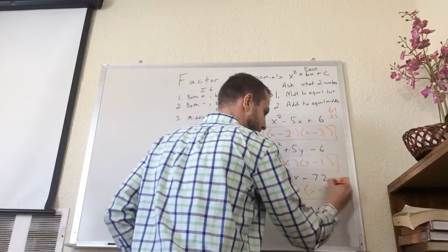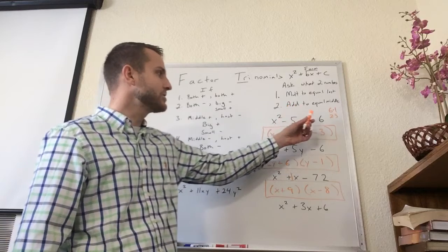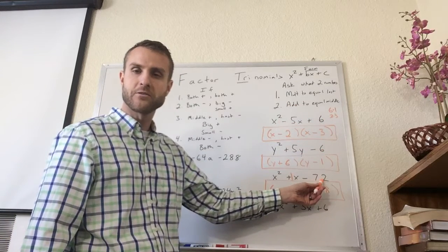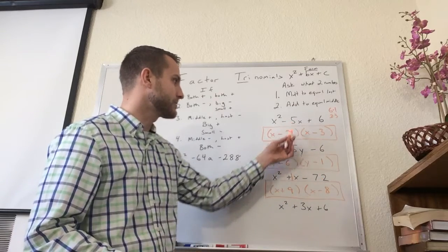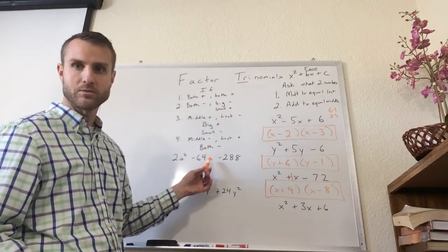So this is my answer. So notice every time what we're doing is we're saying what two numbers multiply together to equal my last number. So I'm finding the factors for my last number. And then of those factors, which add together to equal my middle number, paying attention to the signs using these rules here.